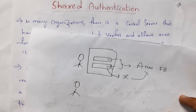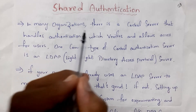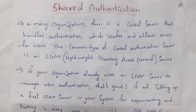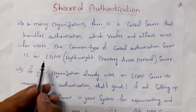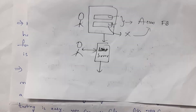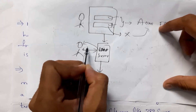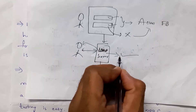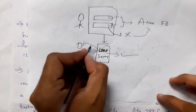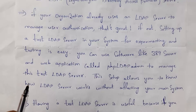If the user is verified as correct, they can access the website; if wrong, they cannot. In many organizations, there is a central server that handles authentication, which verifies and allows access for users. One common type is an LDAP server, where LDAP stands for Lightweight Directory Access Protocol. Many companies use an LDAP server to verify users — if the user is valid, the LDAP server grants access; if not, access is denied.